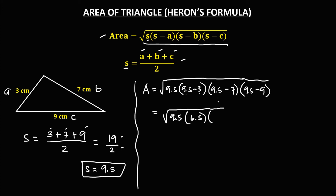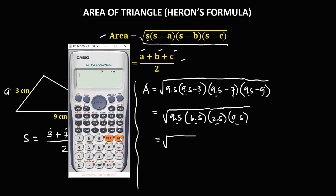Simplifying each term: 9.5 minus 3 is 6.5; 9.5 minus 7 is 2.5; and 9.5 minus 9 is 0.5. So we have the square root of 9.5 times 6.5 times 2.5 times 0.5. Using a calculator: 9.5 times 6.5 times 2.5 times 0.5 equals 77.1875.